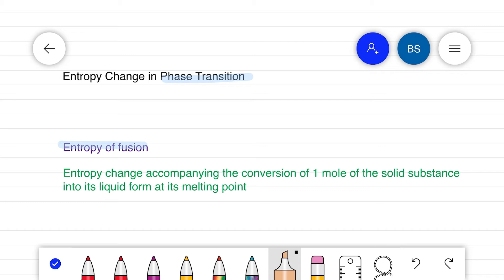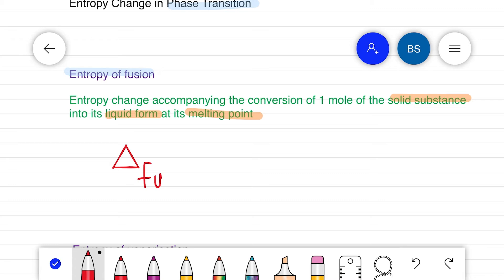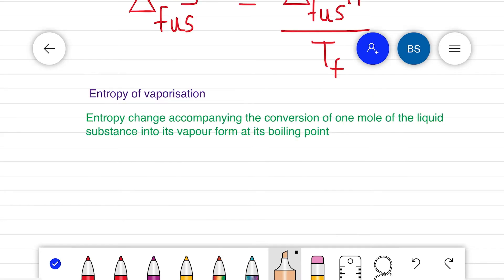The entropy of fusion can be defined as the entropy change accompanying the conversion of one mole of a solid substance into its liquid form at its melting point. The equation is given by delta fusion entropy equals delta fusion enthalpy divided by the temperature of melting, that is melting point Tf.